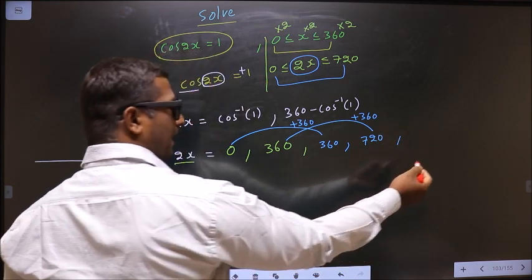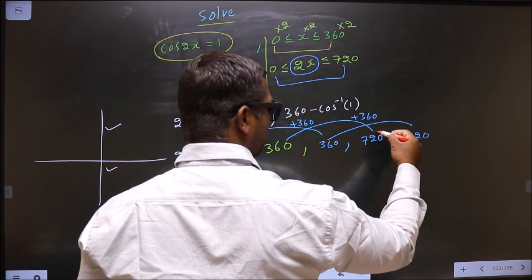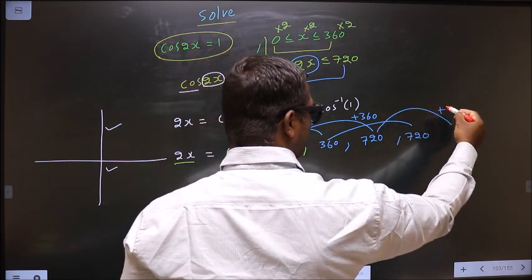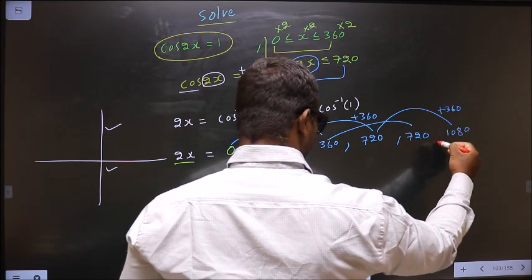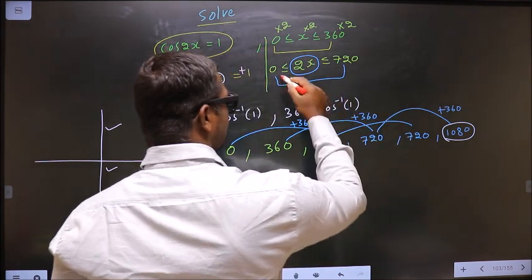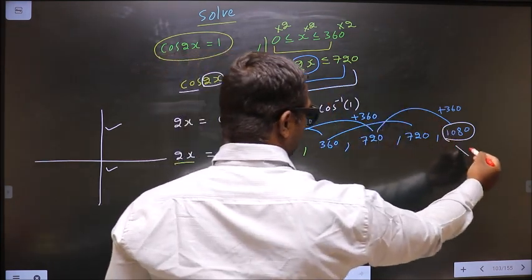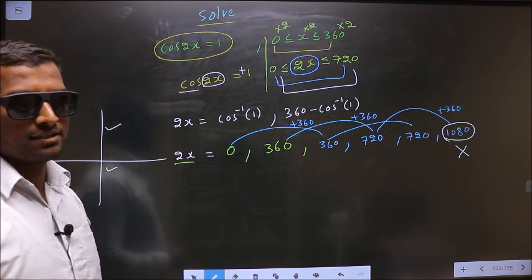To get another angle I should add 360 to this. That will be 720. To get another angle I should add 360 to this. That will be 1080. This does not lie in this interval, so this is where we stop. We don't need to find any more angles.